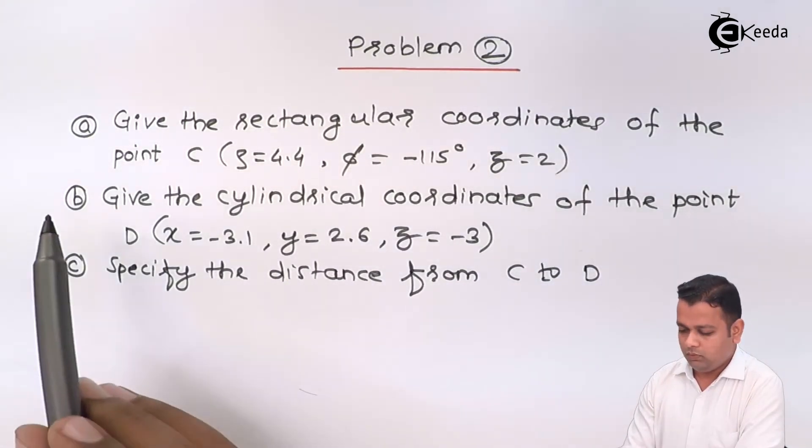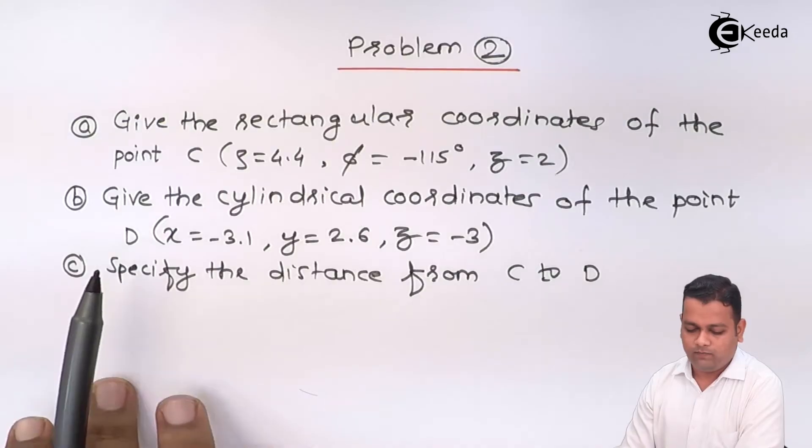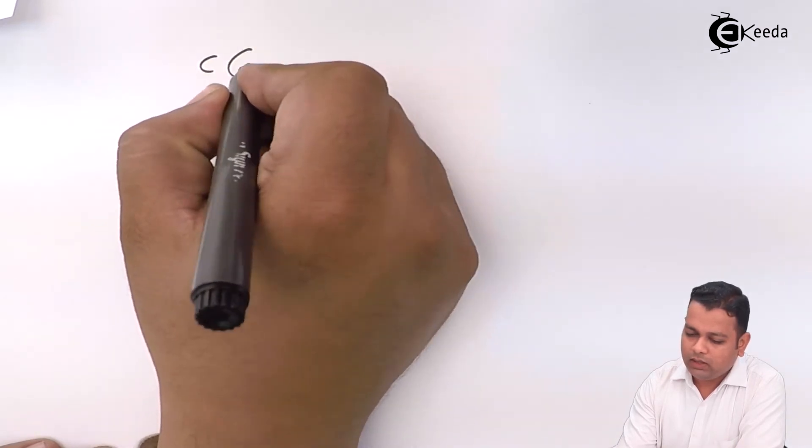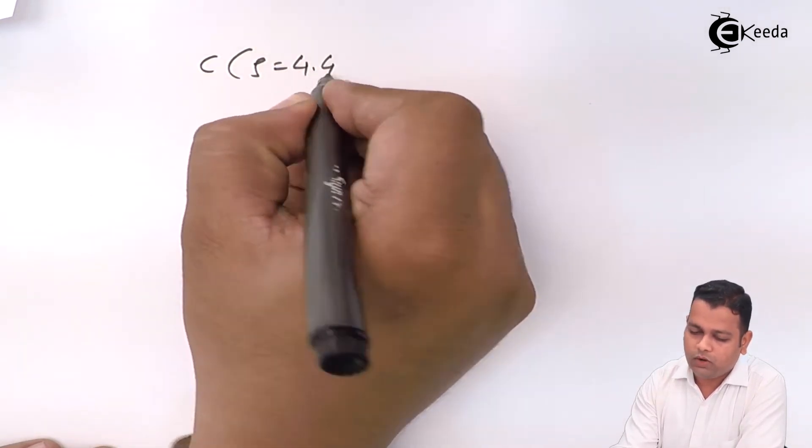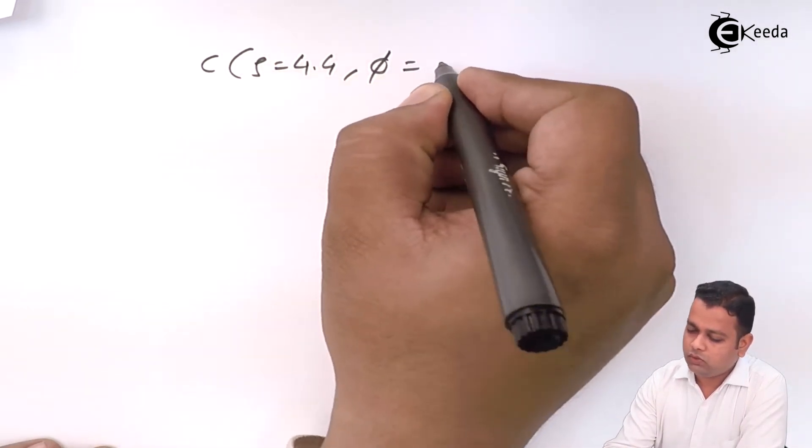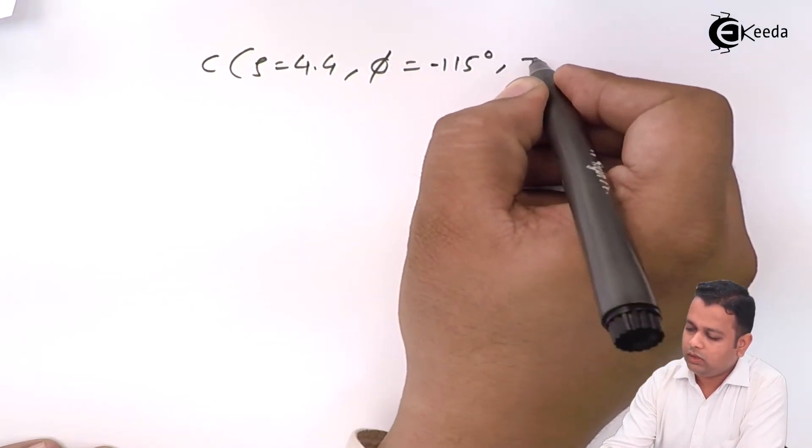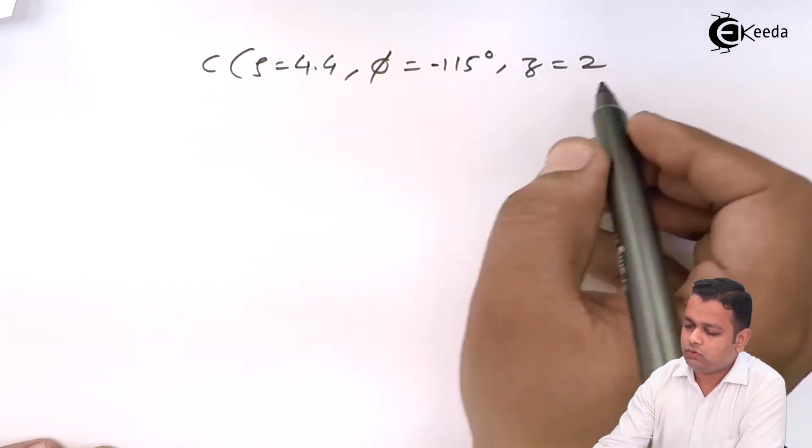So, begin with part A. In part A, the rectangular coordinates are to be determined, while the given data is rho is equal to 4.4, phi is equal to minus 115 degrees, z is equal to 2.